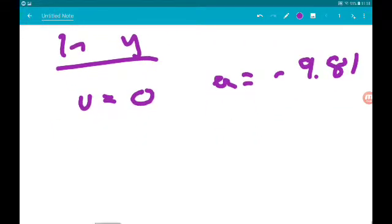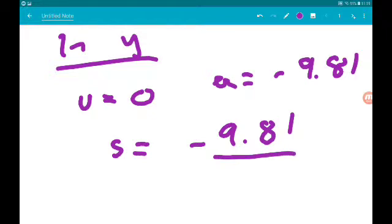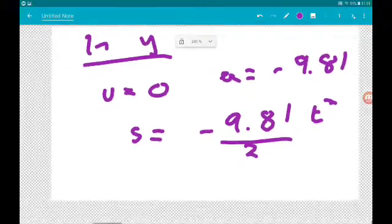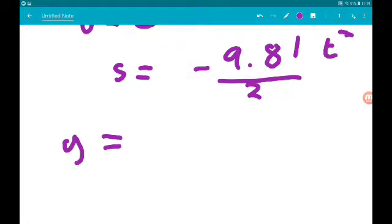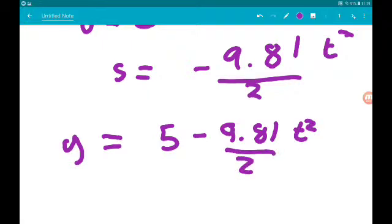Now that means then that our displacement in y, s, is minus 9.81 over 2 times t squared. Now that means then the y coordinate - remember the pebble is starting 5 meters above the ground - so the y coordinate y is 5 minus 9.81 over 2 times t squared.